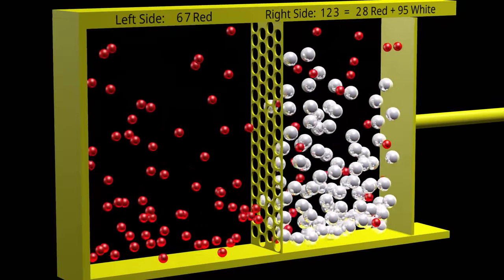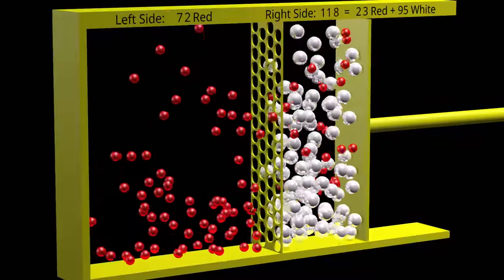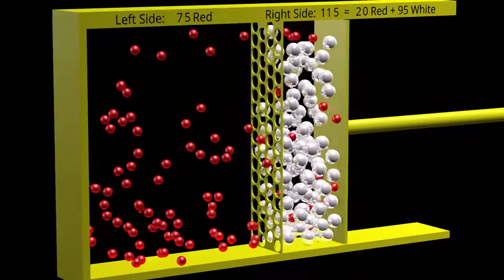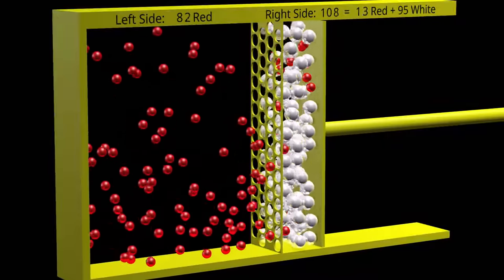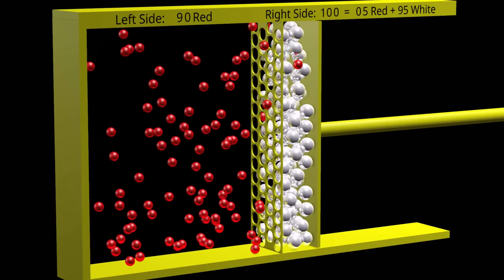Suppose the red balls represent water and the white balls represent salt ions. Reverse osmosis can allow us to generate pure water from contaminated water.